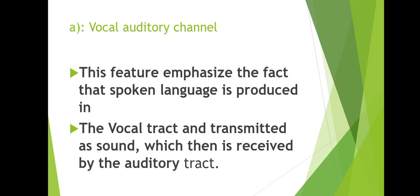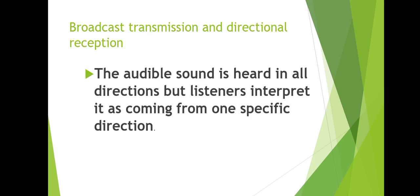The vocal-auditory channel feature states that spoken language is transmitted as sound, which is then received by the auditory system. The second feature is broadcast transmission and directional reception. The audible sound is heard in all directions, but the listener interprets it as coming from one specific direction.